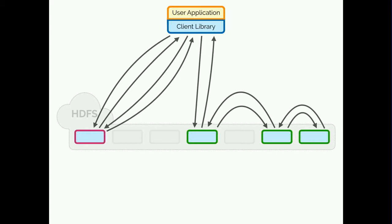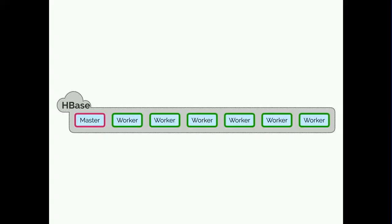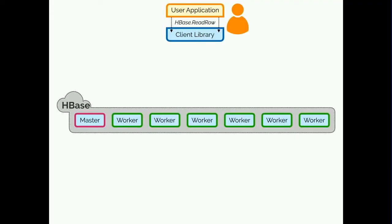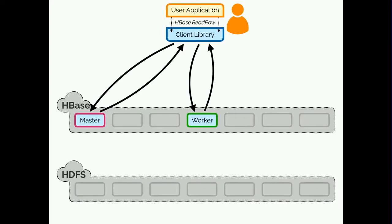Let me throw another spanner in the works. When we operate cloud systems, we don't just run one system — we actually run many systems. HBase, for example, is another popular system; it's a distributed database. Though it performs different work from HDFS, it has a similar master-worker distinction. An API call to HBase — like reading a row from a table — will involve multiple hops to different components. HBase also uses HDFS to persist its data, so a call to HBase may also indirectly access HDFS.